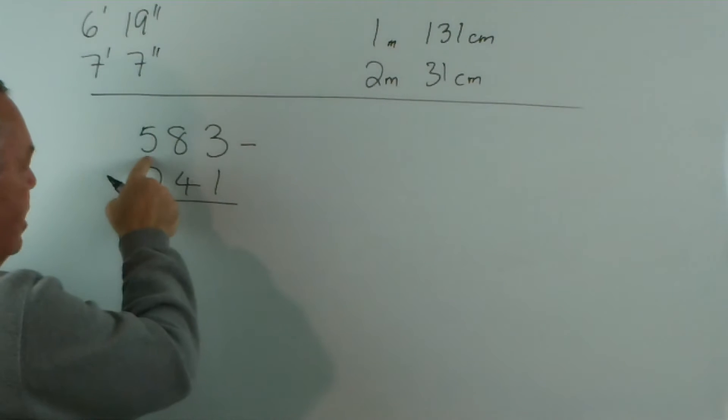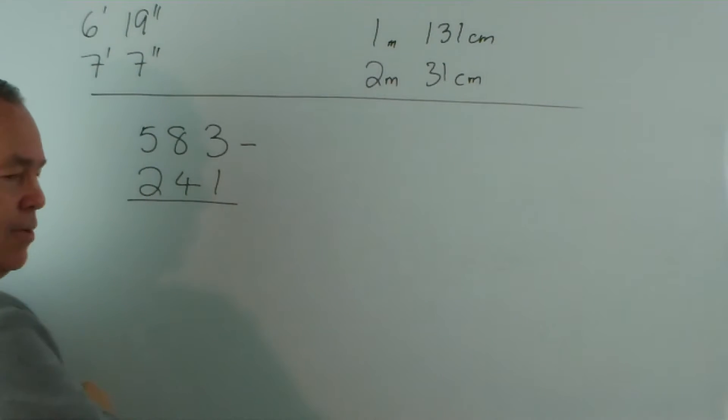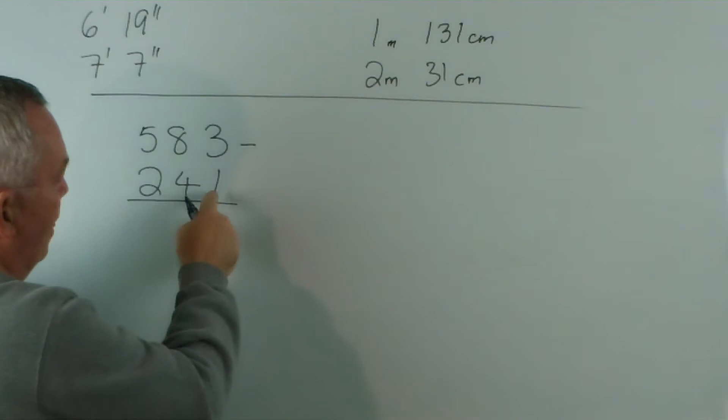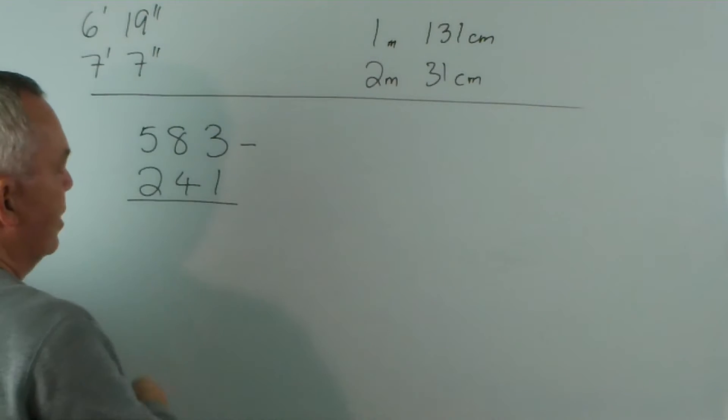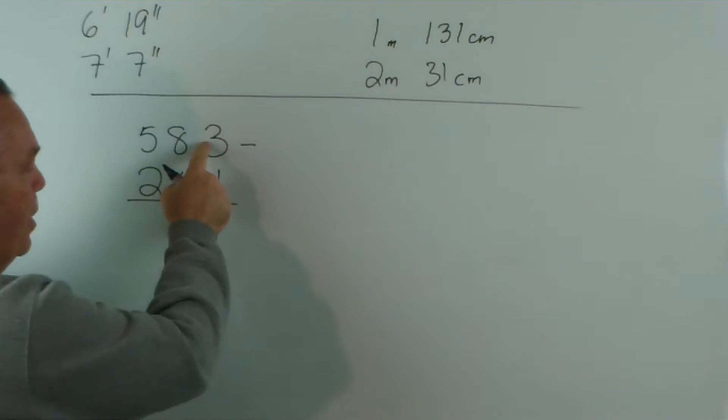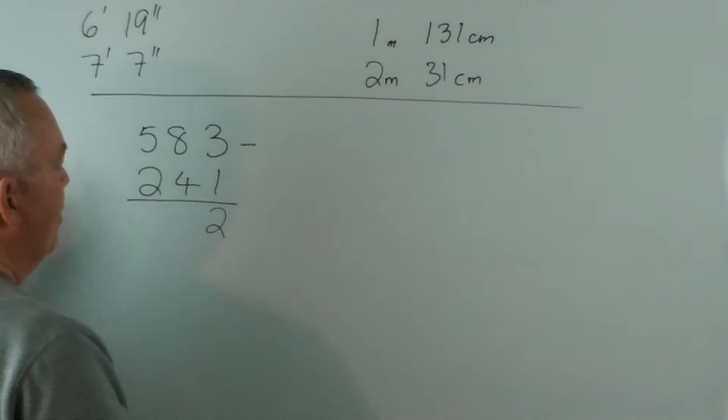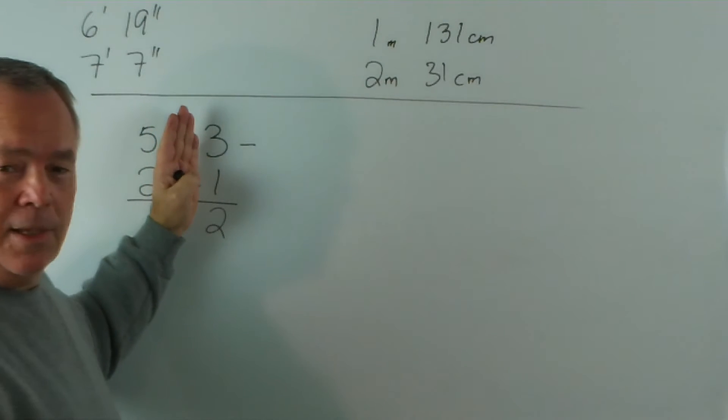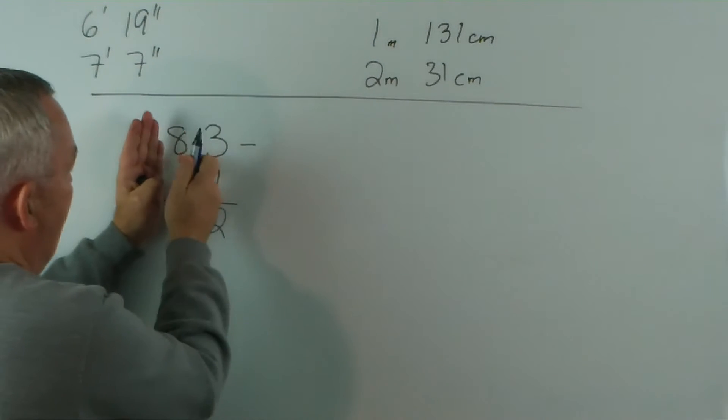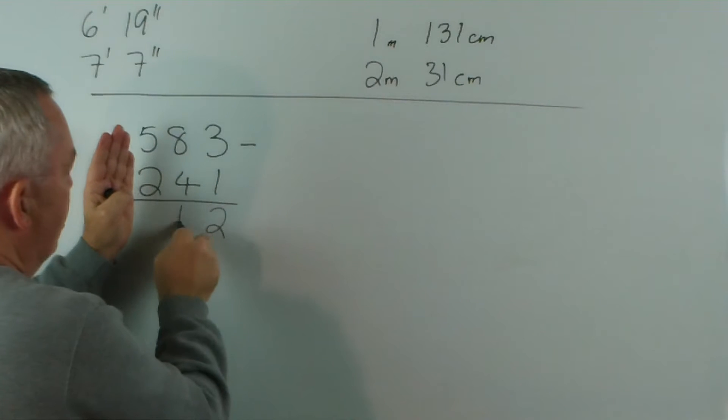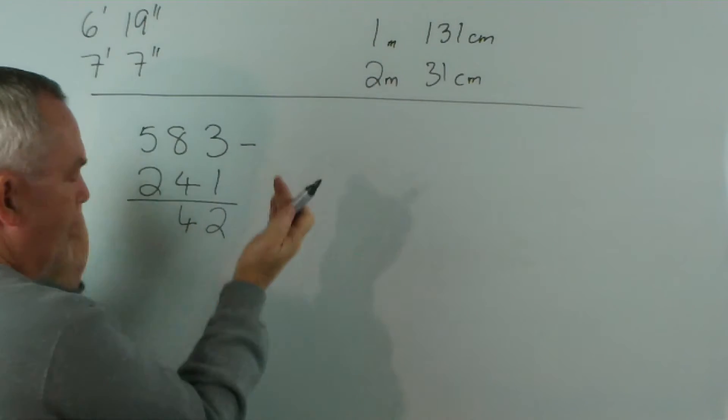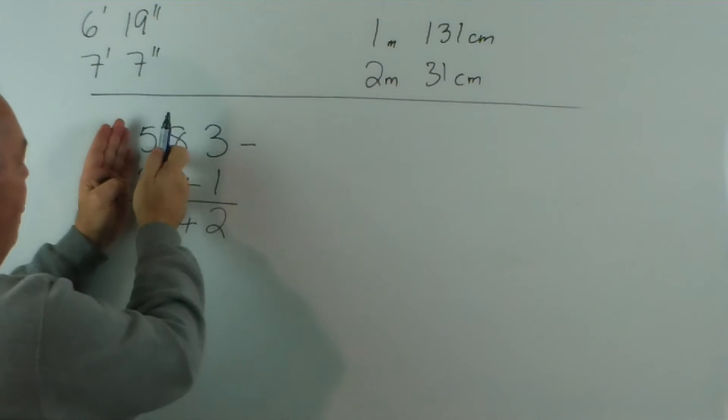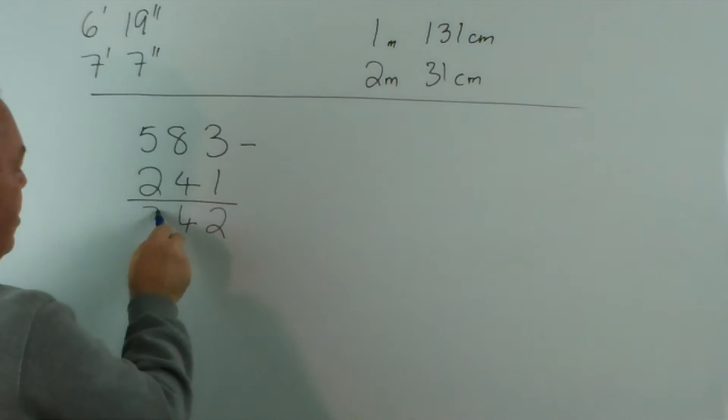And where the numbers on the bottom are smaller than the ones on top, we can perform the subtraction quite easily. We can have three units and take away one unit and have two units — and that is a standalone subtraction. We can have eight tens take away four tens and still have four tens — not a problem. And we can have five hundreds take away two hundreds is three hundreds.